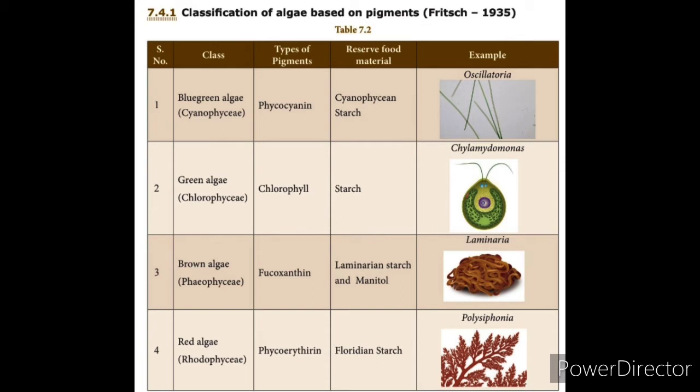These are the four classes. Types of pigments: phycocyanin pigment is present in blue-green algae. The reserved food material is cyanopyrezan starch, and an example species is Oscillatoria.